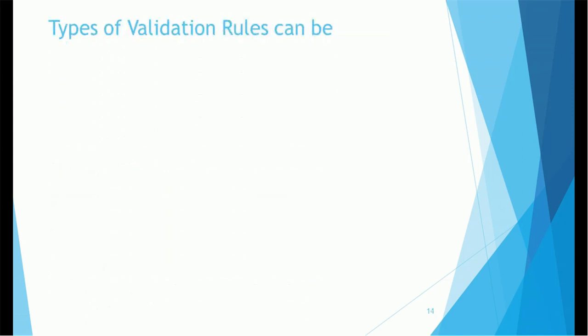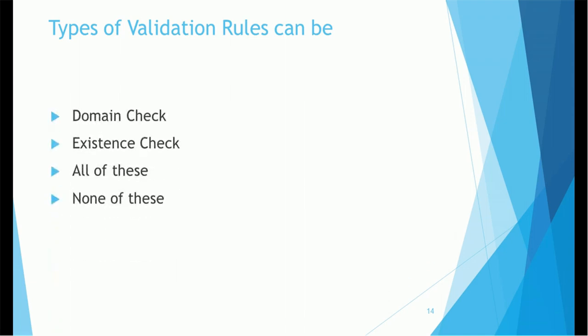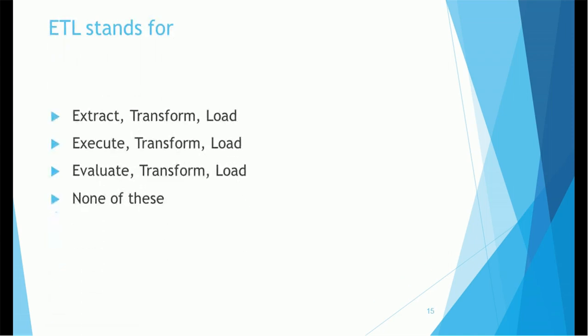Next question: types of validation rules can be — domain check, existence check, all of the above, or none of the above? Can we do a domain check with a validation rule? Can we do an existence check? The correct answer is all of the above — yes, we can do all these checks.